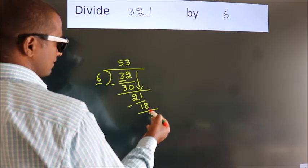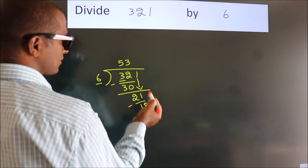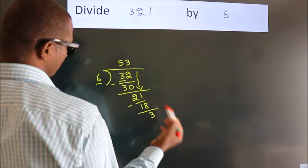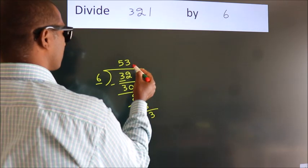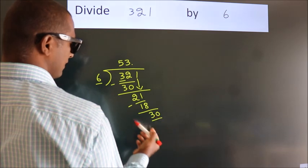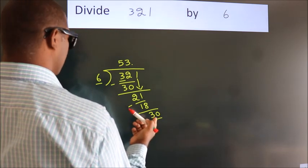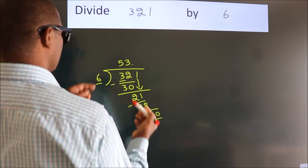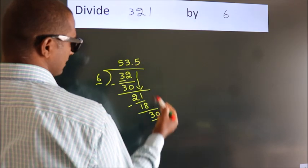After this, no more numbers to bring down. So what we do is we put a dot and take 0. So 30. When do we get 30 in the 6 table? 6 fives, 30.